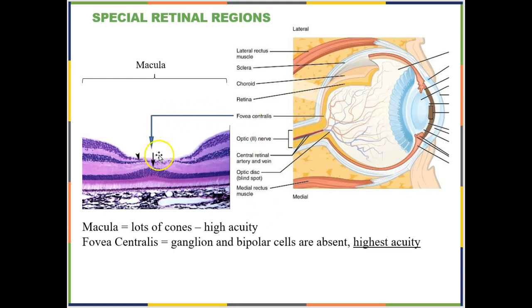In the very middle of your macula lutea is your fovea centralis. Here you can see that the nuclei of the bipolar cells and ganglion cells are pushed off to the side, so there is less in the way between the incoming light and your photoreceptors. Your fovea is the middle portion of your field of view — it is what you're looking directly at, and that is the part of the world you can see most clearly.